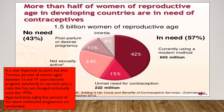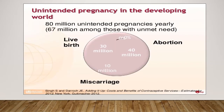It is also important to note that 13% of women aged between 15 and 19 years become pregnant voluntarily or not each year — a ratio that has not changed statistically since the 1970s. Approximately 85% of these pregnancies are unintended, resulting in approximately 80 million unintended pregnancies yearly, of which 67 million are amongst those with an unmet need for contraception.